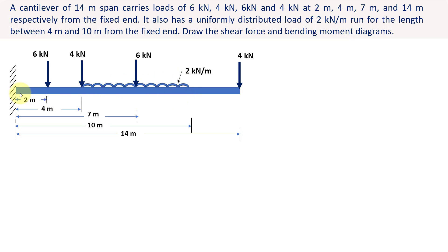Let us mark the points where we are going to find the shear force and bending moment values. Point A is the fixed end, point B represents where the first point load is active, point C is the next point load, point D is another point load, and point E is at the end of the UDL. Wherever there is a point load or the start or end of a UDL, we must consider a point to determine shear force and bending moment values. Point F represents the final point load of 4 kN.